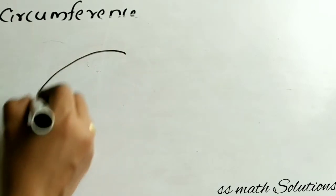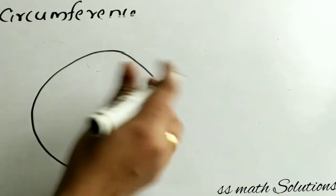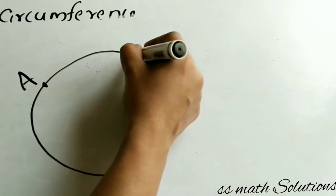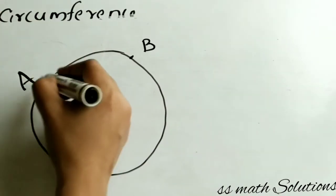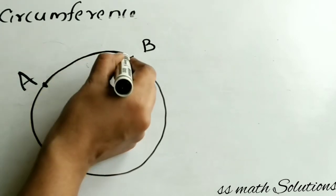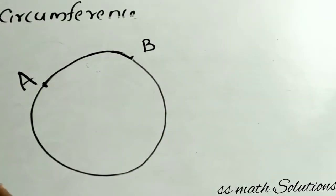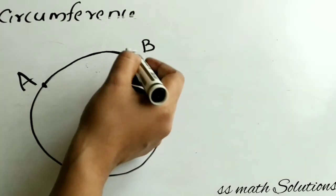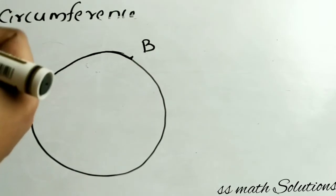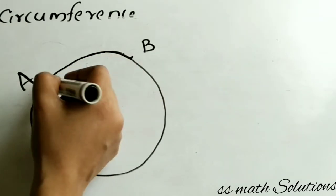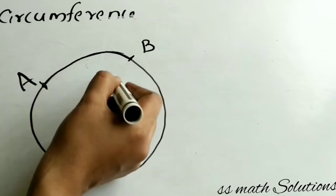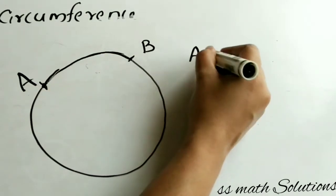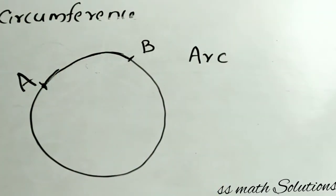Now we can draw another circle. I am taking any two points — we can call them A and B. This distance is a part of a circle, a piece of a circle or part of a circle. A and B is a part of a circle — this piece of a circle between two points, where both end points are on the circle. This is called an arc.